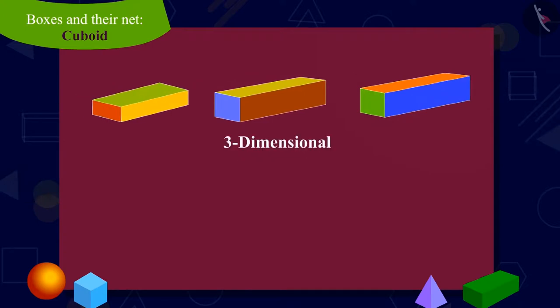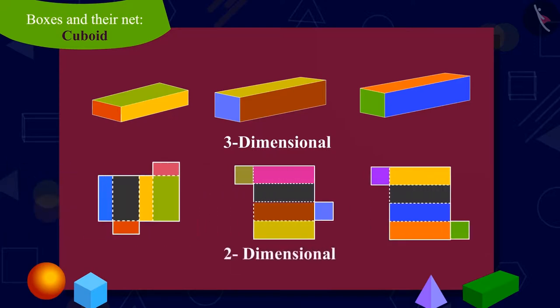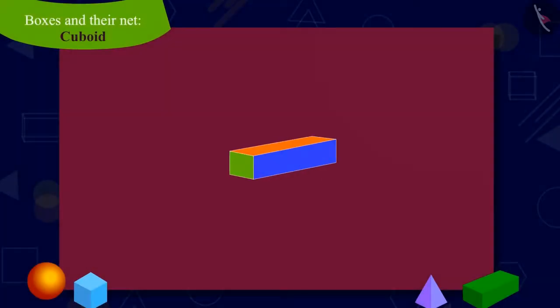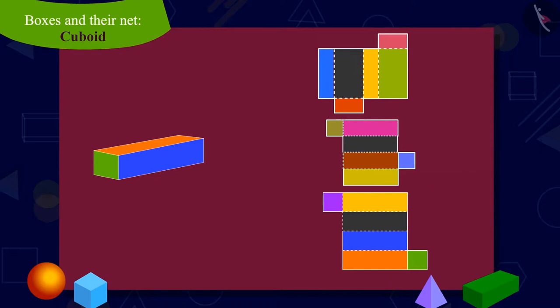Yes, children, many two-dimensional nets of any three-dimensional shape, such as cuboids, can be made. We can make any box by folding various types of nets.